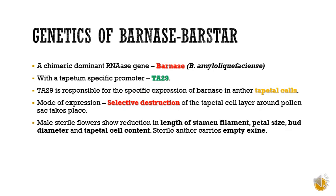Their mode of expression involves selective destruction of the tapetal cell layer around the pollen sac, which is responsible for creating male sterility. Due to the action of Barnase, the male sterile plants show reduction in the length of the stamen filament, petal size, bud diameter, tapetal cell content, and the sterile anther carries an empty locule.